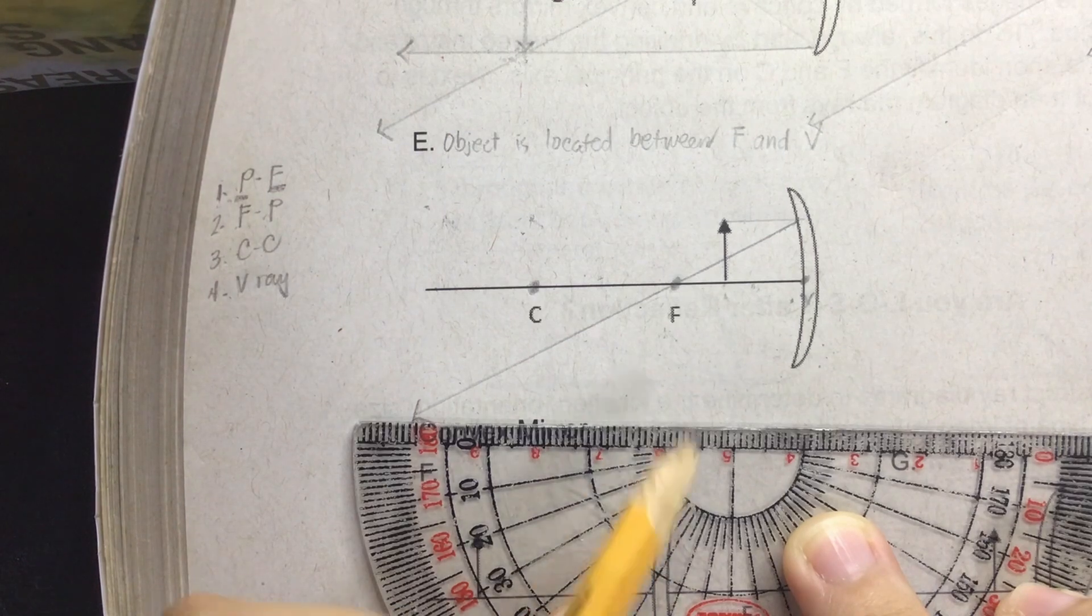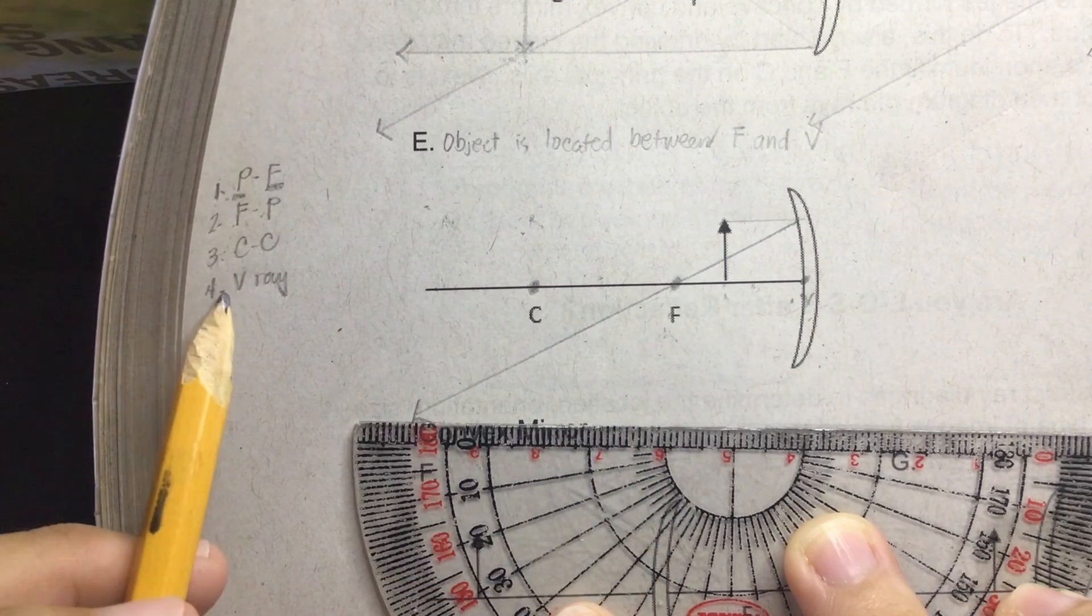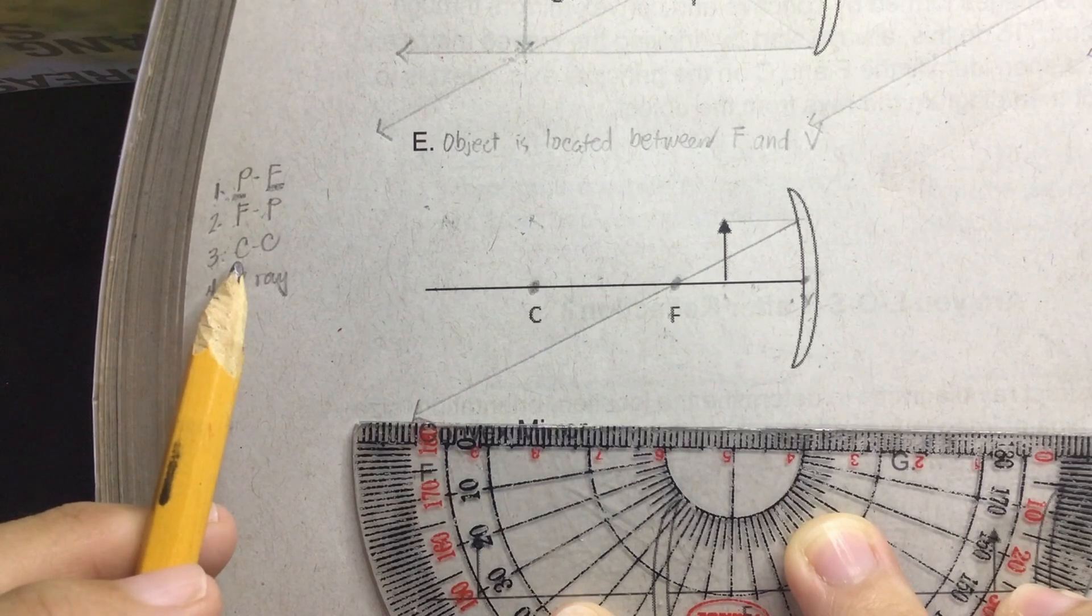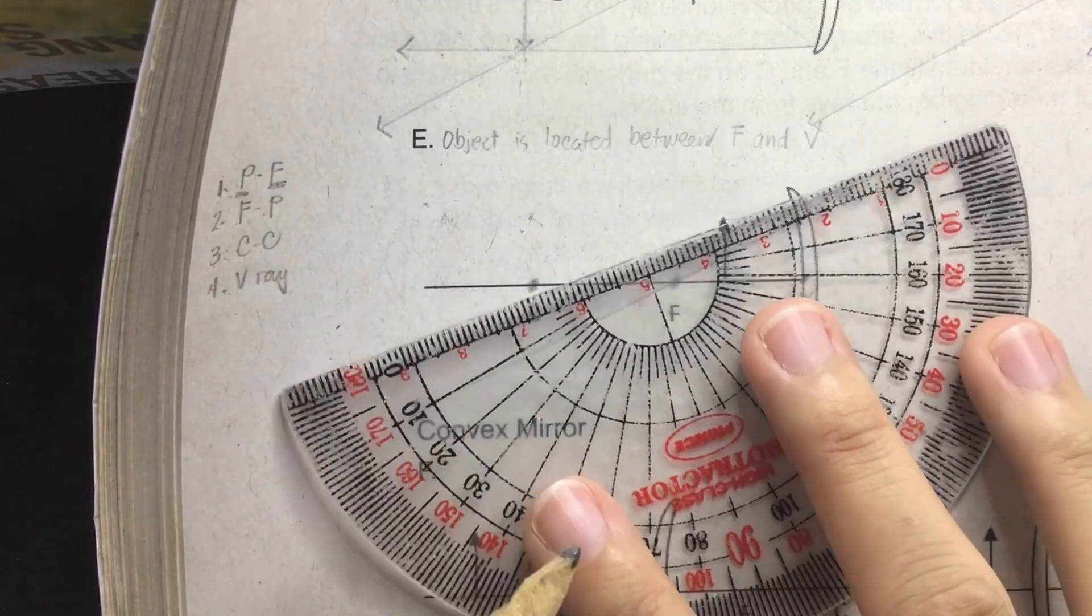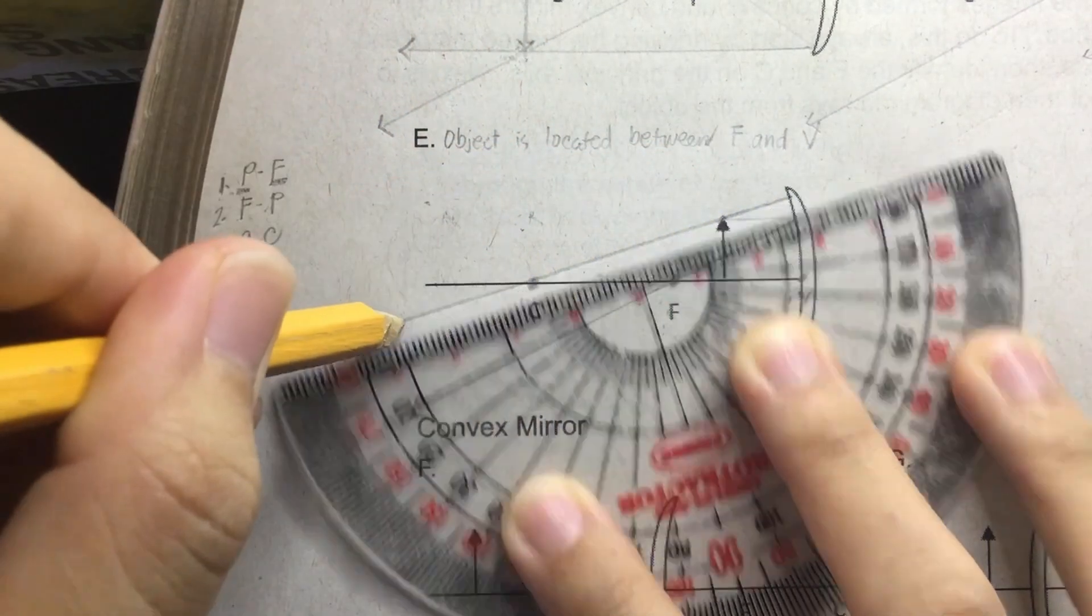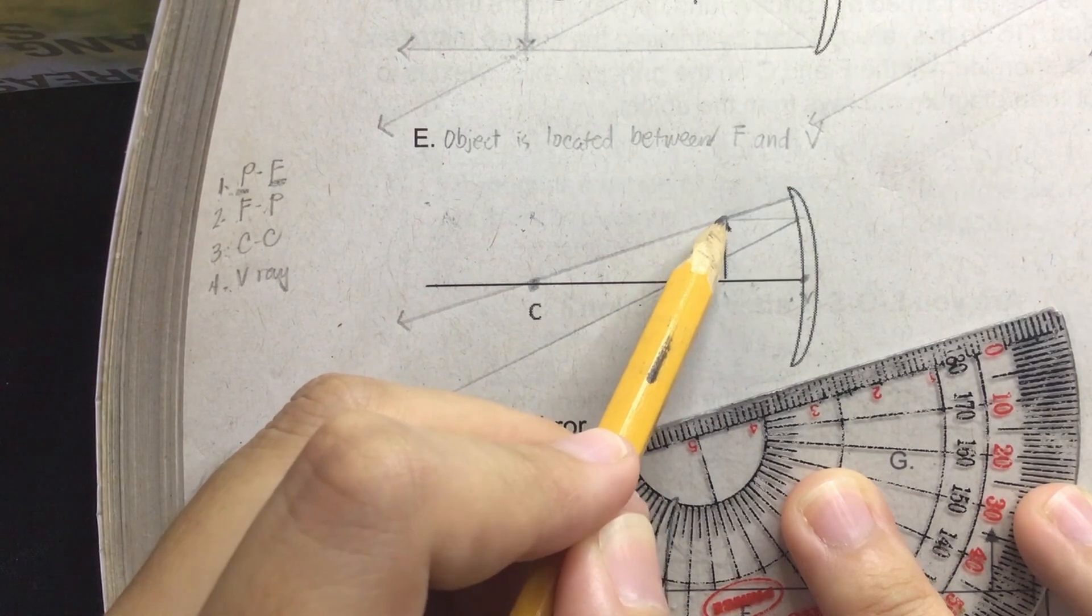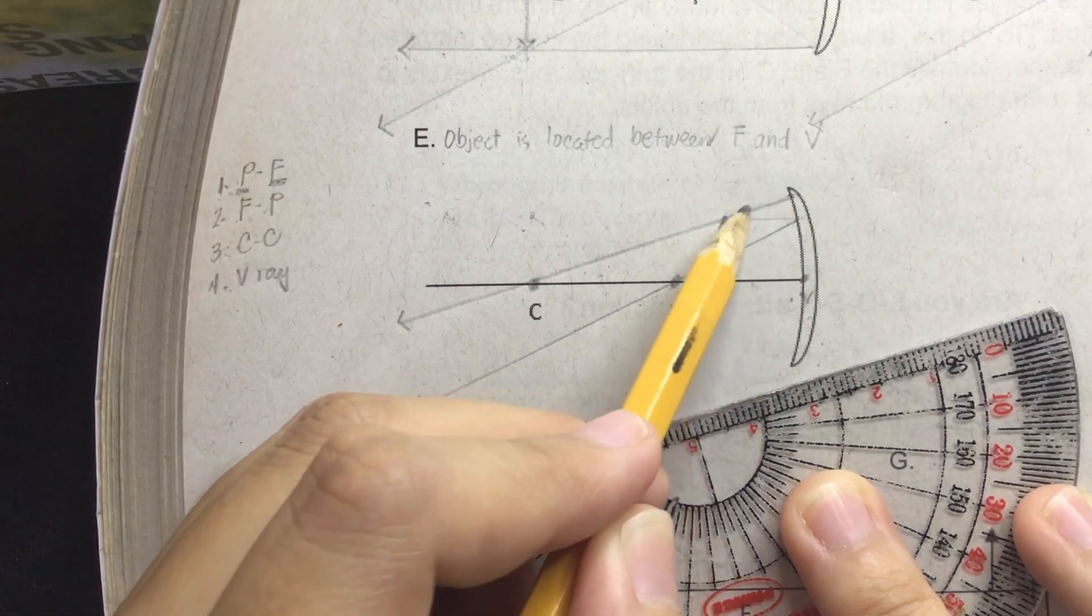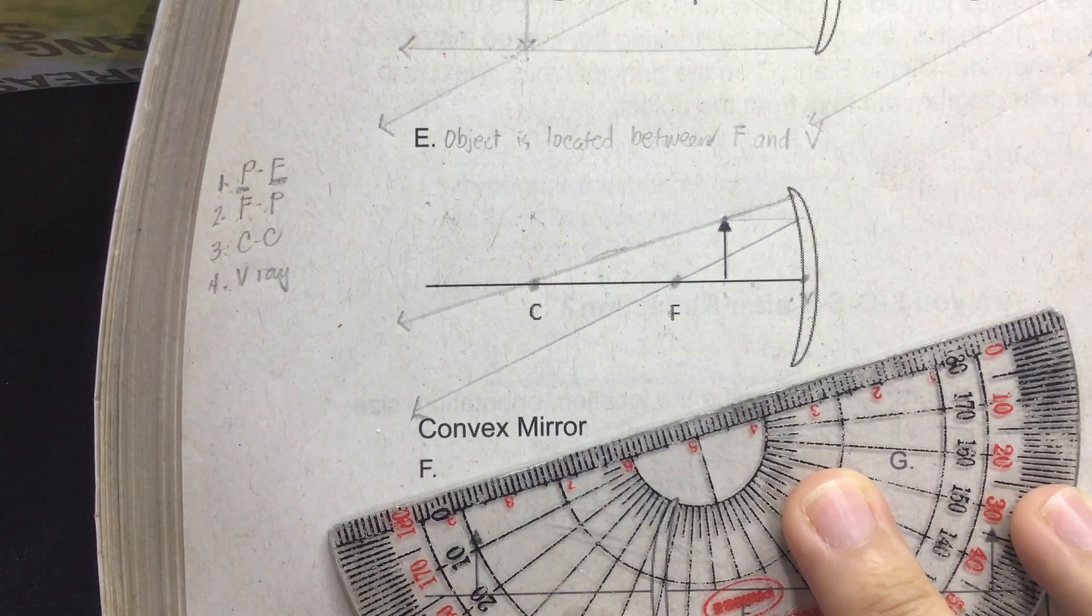Next let's choose between C-C ray and V ray. So let's perform the C-C ray this time. C-C ray is a ray of light directed towards the center of curvature. So it is a ray of light starting here going to the mirror and reflected to the center of curvature.